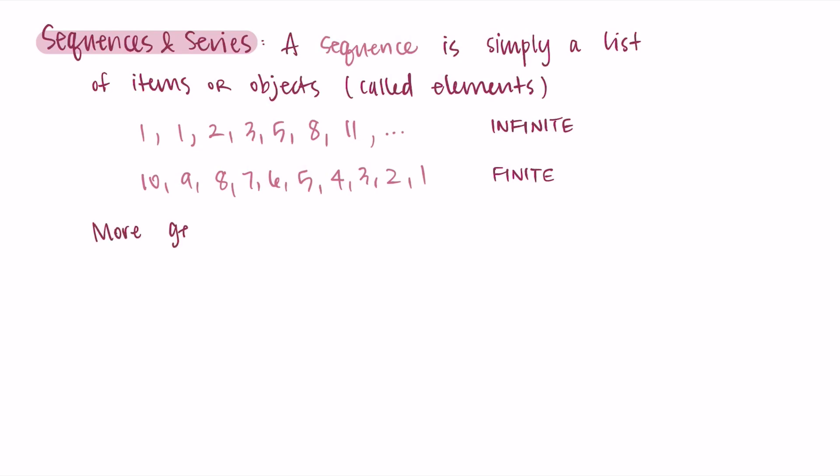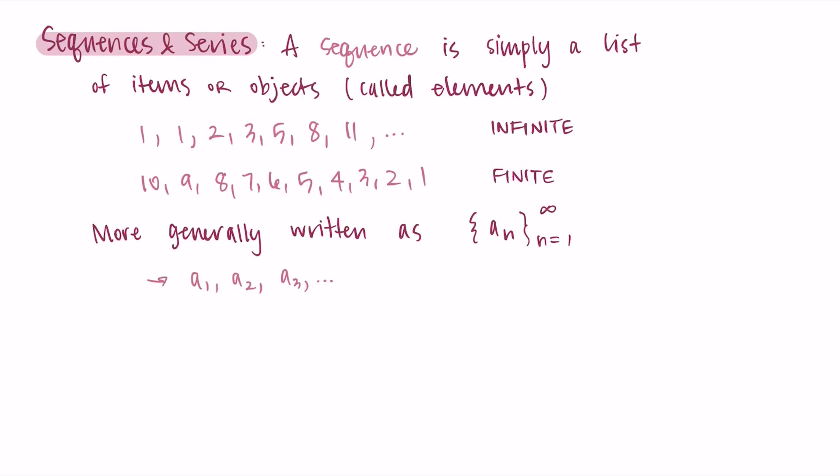Instead of writing them all out each time, we have some shorthand. We more generally write this as a sub n. I'm using curly braces here, and we do from n equals 1 to infinity. When we have those indices on the outside, like n equals 1 to infinity, those are the bounds on this sequence where the first term is a sub 1, then a sub 2, a sub 3, etc. until we get to the end. This would be an infinite sequence because it starts at the first term and goes on infinitely. I tend to use the curly braces to show this is a sequence, but sometimes people just use parentheses.